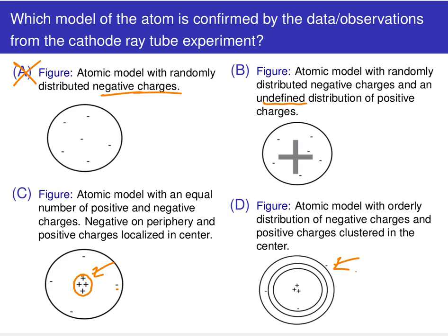You have to ask: did Thomson's experiment provide any refinement or information about the structure of that positive charge? The answer is no. All he says is that there must be some positive charge, but we don't know it's all localized in the middle.